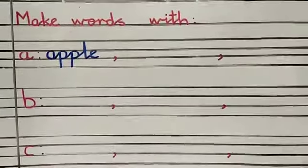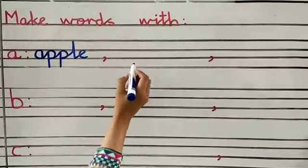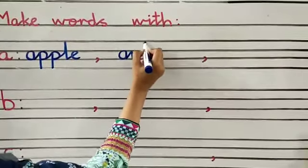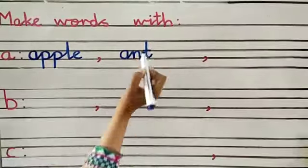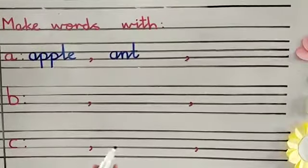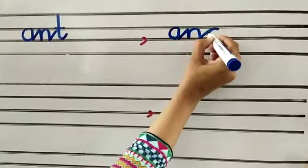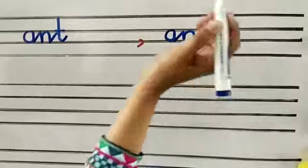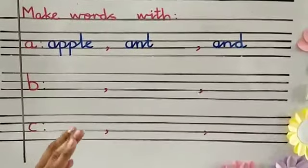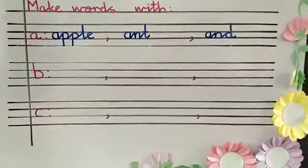Any other word that begins with A? Ant — A, N, T — ant. Any other word? And — A, N, D. There are many other words that begin with A; you can write any three words. You can write whatever you want. Come to the next letter — B.